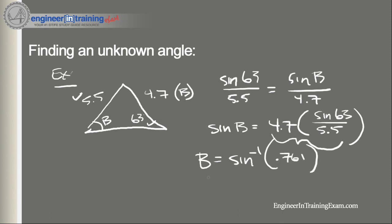Taking the inverse sine, we find that B is equal to 49.6 degrees. So we're also able to find an unknown angle using the law of sines.